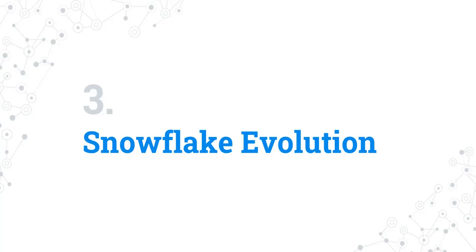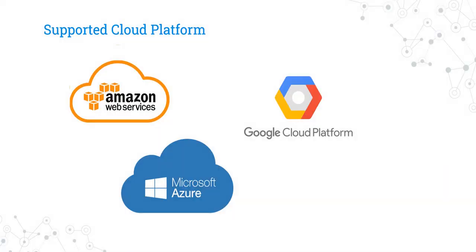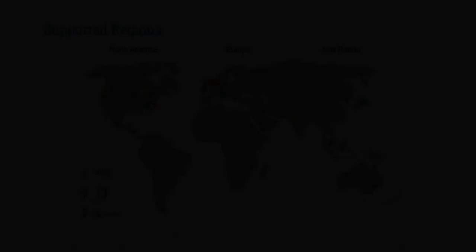We are going to see various features and advancements in Snowflake. But first, let's understand a few things. Currently, Snowflake supports three cloud platforms: Amazon Web Services, Google Cloud Platform, and Microsoft Azure. Snowflake supports various regions across the world, categorized into three: North America, Europe, and Asia-Pacific. Each of these regions is supported by the respective cloud platform — Amazon, Google, and Microsoft Cloud.